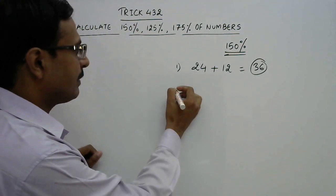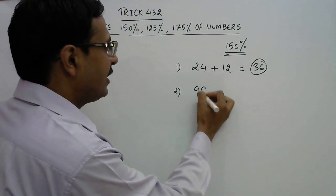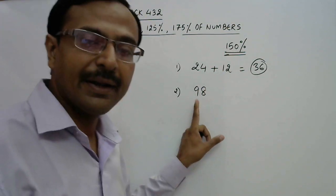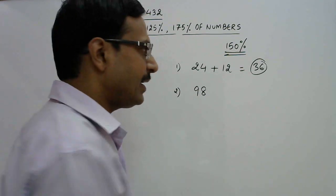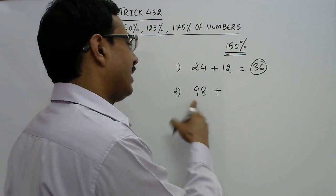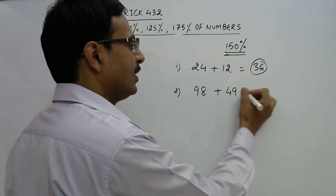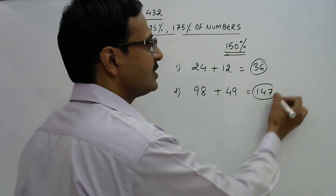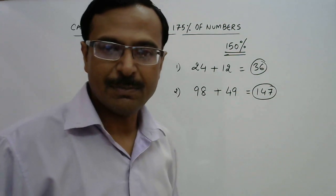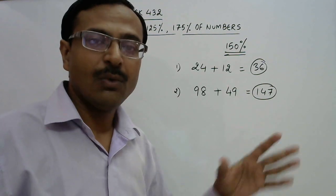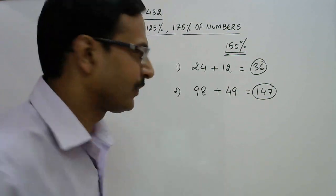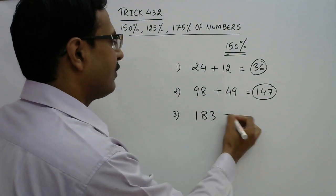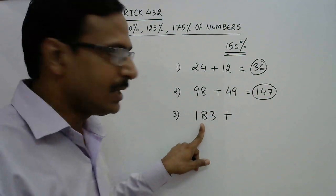Let's take more examples. Suppose we have 98 and we want to calculate 150% of 98. Half of 98 is 49, so add 98 and 49 to get 147. So 150% of 98 is 147.